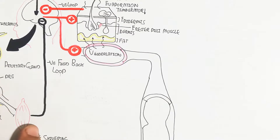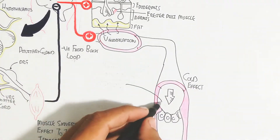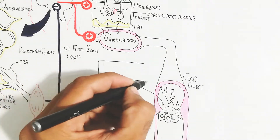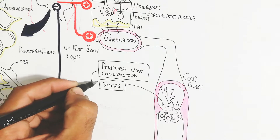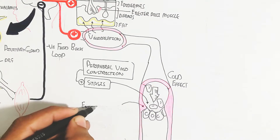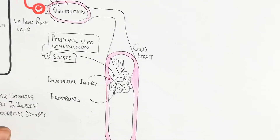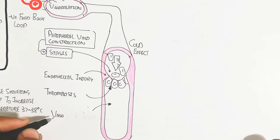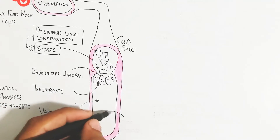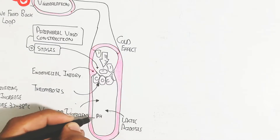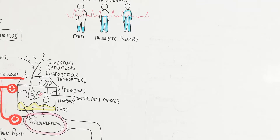Vasodilation is also triggered by heat stimulus. In contrast, continuous cold exposure causes peripheral vasoconstriction, leading to blood stasis. This stasis leads to endothelial injury, which causes thrombosis formation. The thrombosis blocks arteries or veins, causing hypoxia. Low oxygen levels drive anaerobic respiration in tissues, leading to ischemia, stroke, and lactic acidosis, which decreases blood pH and can cause death.